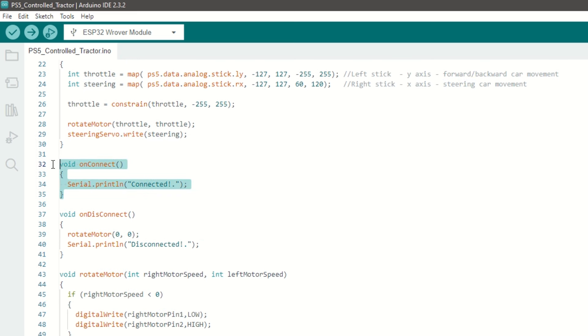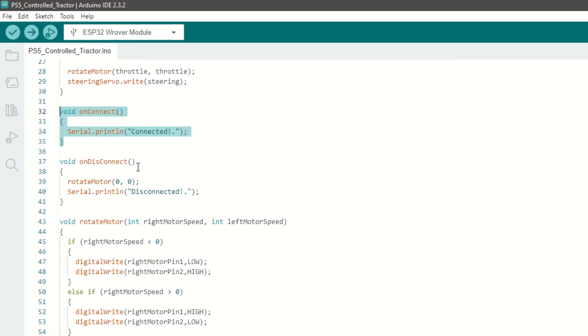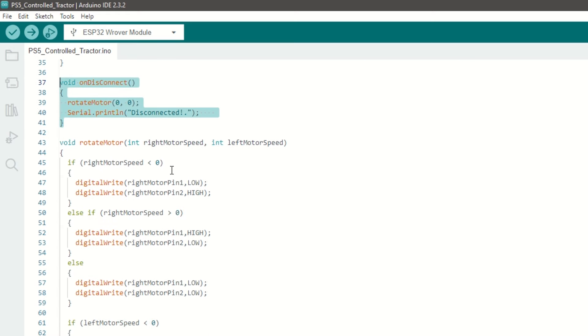We have on connect callback function which will be called when PS5 controller is connected. We have on disconnect callback function which will be called when PS5 controller is disconnected. In this case we will stop the motors.